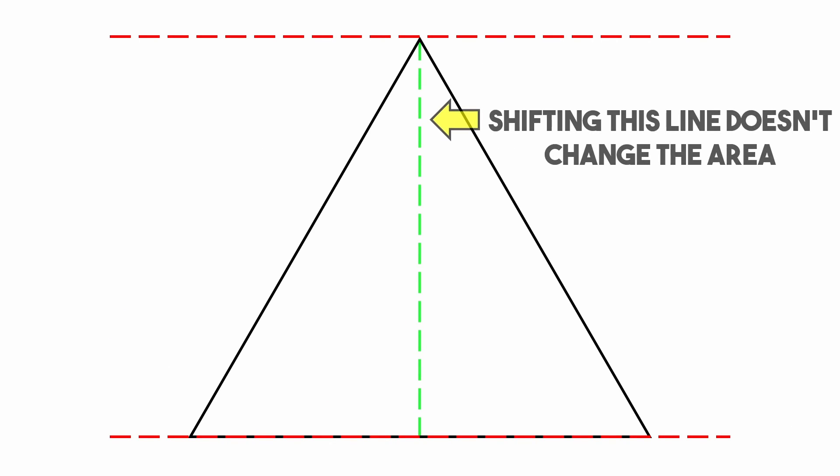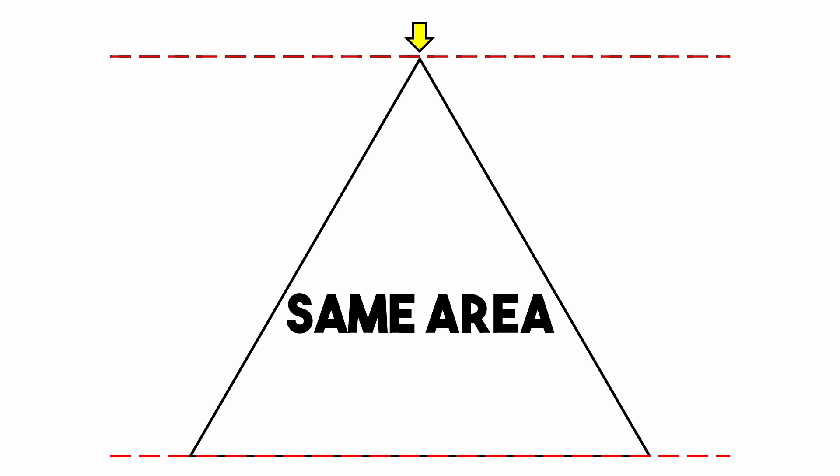But this is just the beginning, because now that we know shifting this line doesn't change the area of our triangle, we can also say with certainty that shifting this point opposite to the base along the horizontal line doesn't change the area of our triangle.